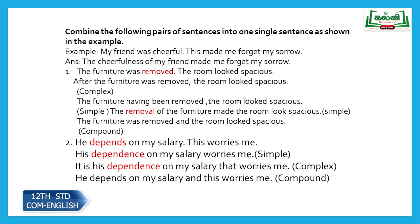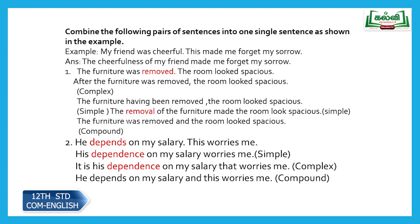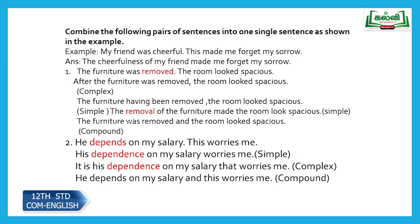Exercise: 'The furniture was removed. The room looks spacious.' Remember, in the examination you are going to write only one answer — I am giving you all three forms just for practice. The word underlined is 'removed'. Complex form: after the furniture was removed, the room looks spacious — one subordinate clause and one main clause. Simple form: the furniture having been removed, the room looks spacious — 'looks' is the only finite verb.